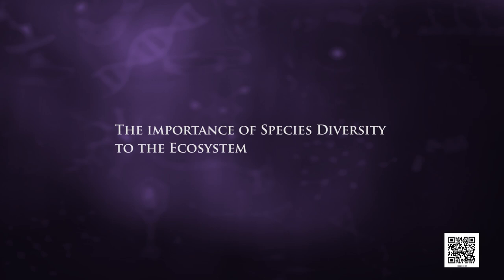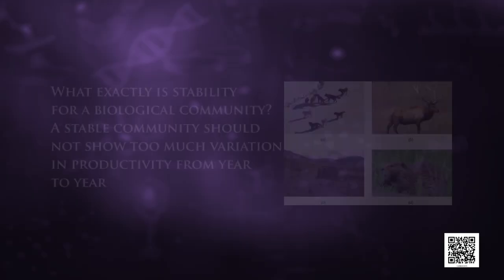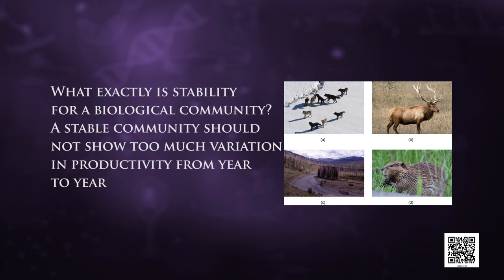Does the number of species in a community really matter to the functioning of the ecosystem? This is a question for which ecologists have not been able to give a definitive answer for many decades. Ecologists believe that communities with more species generally tend to be more stable than those with fewer species. A stable community should not show too much variation in productivity from year to year.